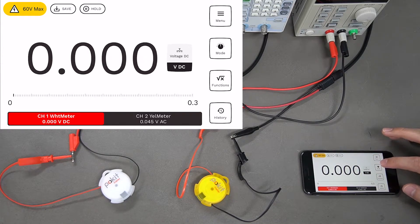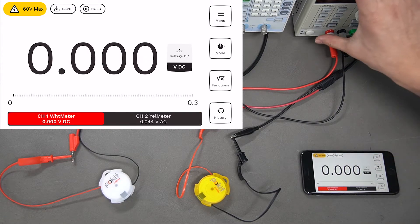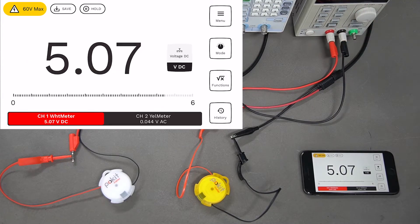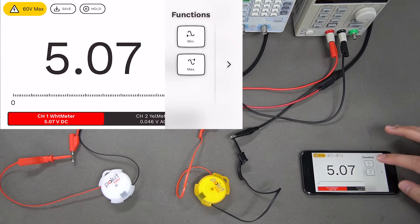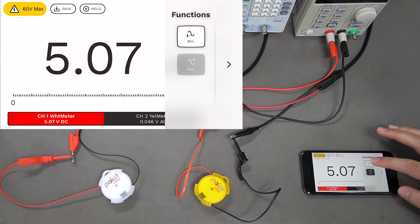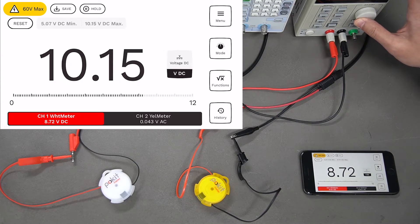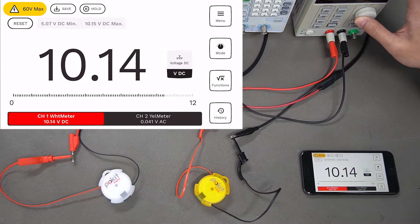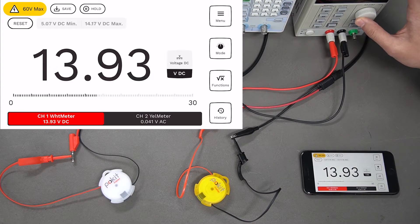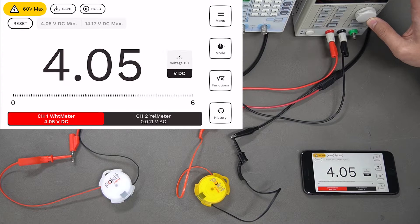We'll start taking some readings. We'll turn this on and we've got this functions button on the side, so we can take the minimum and maximum values. I'll start moving this around so we can see that moving up, and we can also bring it down to get a minimum value.